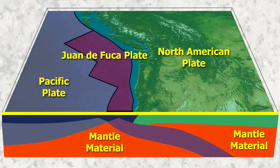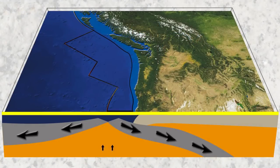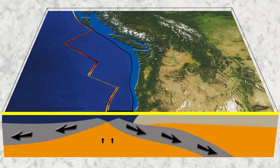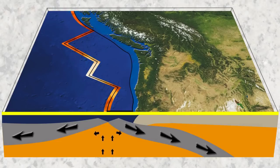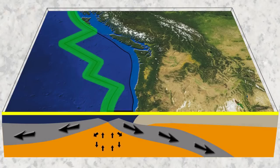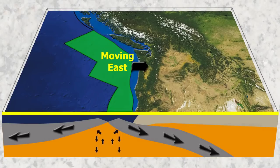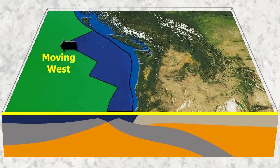So we have the North American plate, the Juan de Fuca plate, the Pacific plate, and the Earth's mantle. This process begins with mantle material welling up due to convection. The upwelling of mantle material pushes up in between the plates, pushing the plates apart. This mantle material that reaches the sea floor becomes new plate material. In our case here, the Juan de Fuca plate moves to the east and the Pacific plate moves to the west.